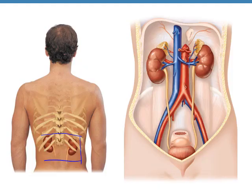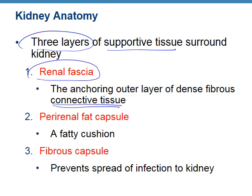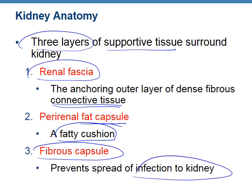Here's another figure showing that the kidneys sit directly anterior to T11 and T12, or the floating ribs. You can see the right and left don't quite line up. With the kidneys, we have three layers of supportive tissue: a renal fascia, which is an anchoring connective tissue layer; a fat capsule, a fatty cushion; and a fibrous capsule that prevents infection to the kidney.